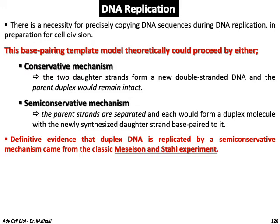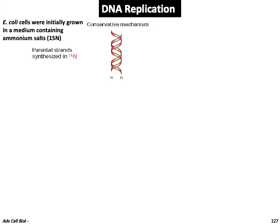Definitive evidence that duplex DNA is replicated by a semi-conservative mechanism came from the classic Meselson and Stahl experiment. Initially, E. coli were grown in a medium containing ammonium salts with the radioactive isotope for nitrogen, which is a molecule in the nucleotide. The resultant DNA in the E. coli was radioactive — termed 'H' for heavy — with both parental DNA strands composed of radiolabelled nucleotides.